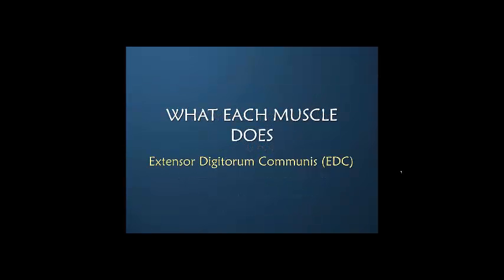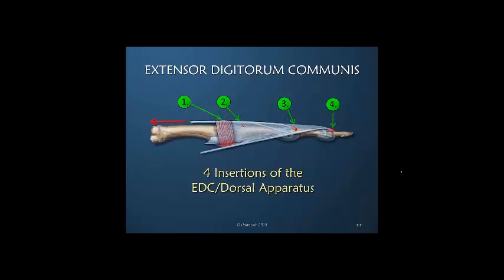Now let's tease out each muscle and look at it more precisely in terms of what it's doing to create motion. First, the extensor digitorum communis. In our first course we talked about the four insertions of the extensor digitorum communis — it's not technically just the insertion of the EDC. The first one, the sagittal bands, is the strongest and most primary influence. As these insertions move distally, they have a decreasing contribution of extensor digitorum communis power.